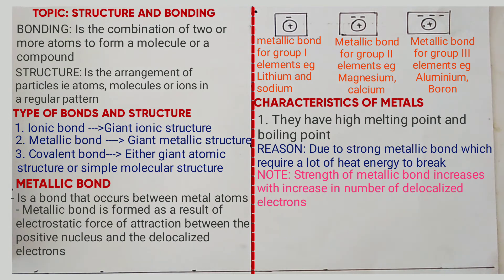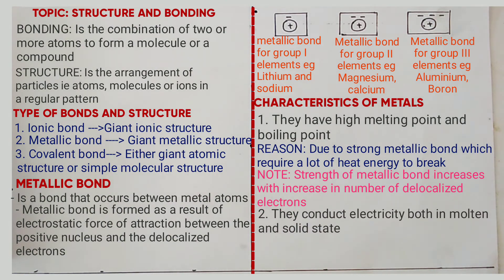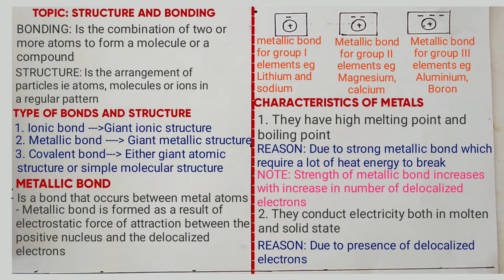Property number two: they conduct electricity, heat in molten and solid state. Reason: due to presence of the delocalized electrons. Conductivity of metals also increases with increase in number of the delocalized electrons. For example, sodium has lower conductivity than copper because sodium has got fewer delocalized electrons, i.e. one, unlike copper which has two.